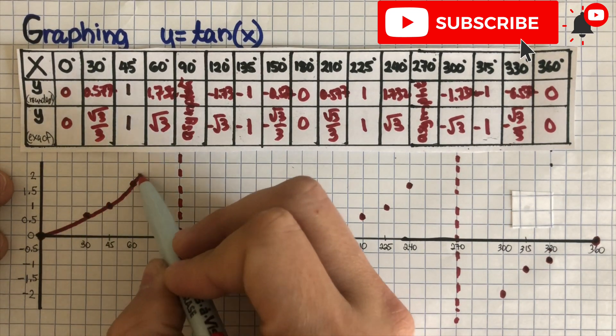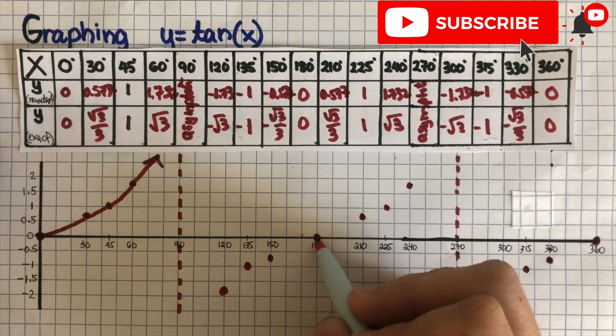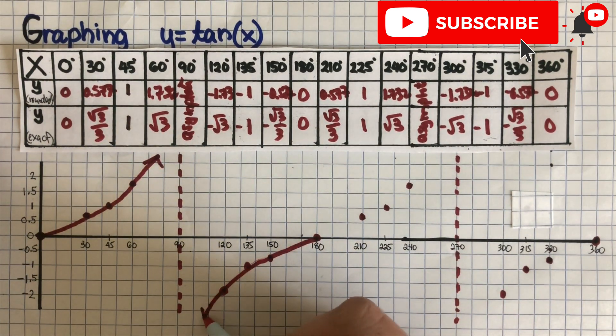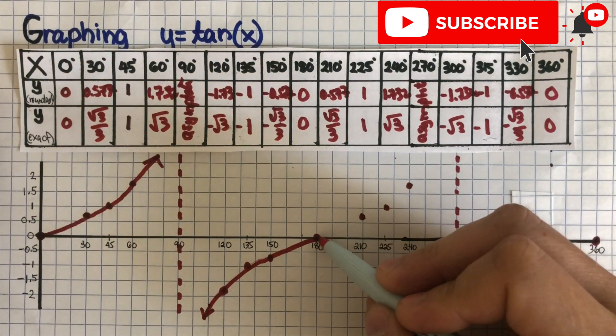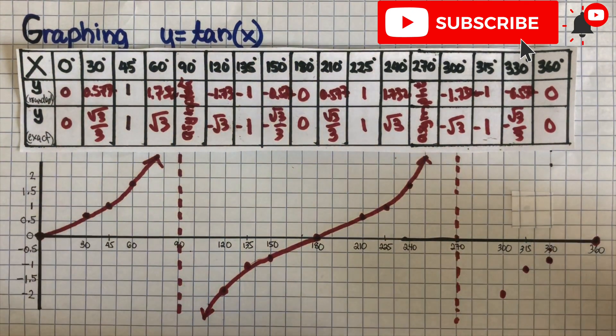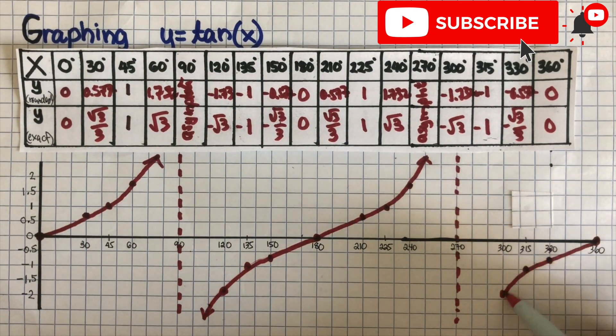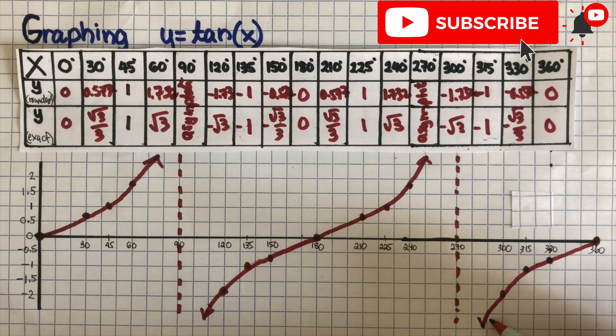So that should go that way, a line that goes towards the asymptote. This line is going to go towards the asymptote as well. And then this line right here is going to go up going to the asymptote. And then this line right here is going this way to the asymptote.